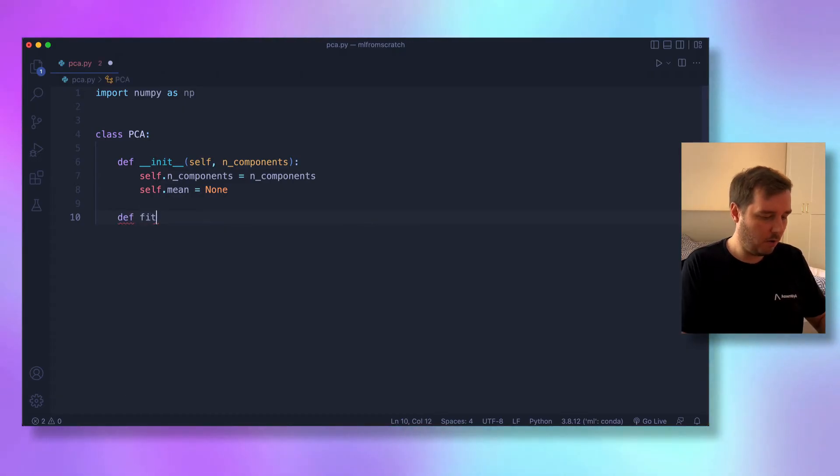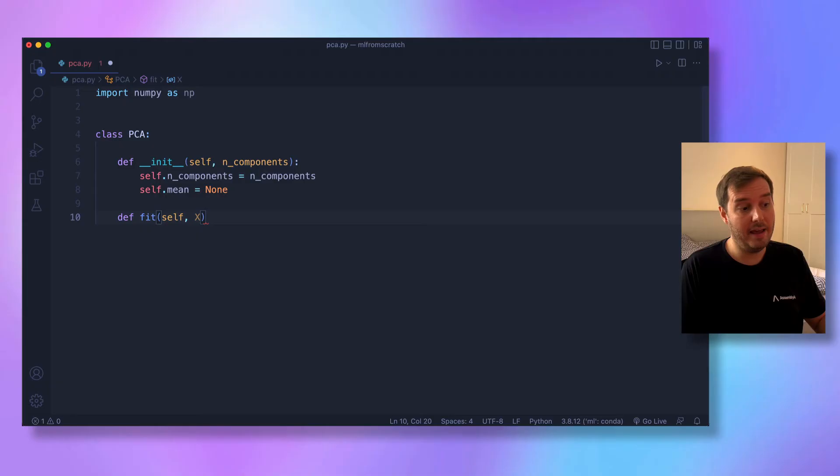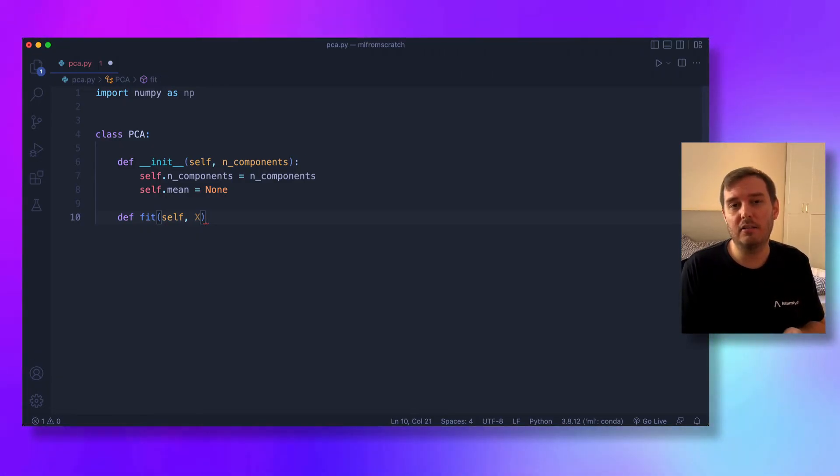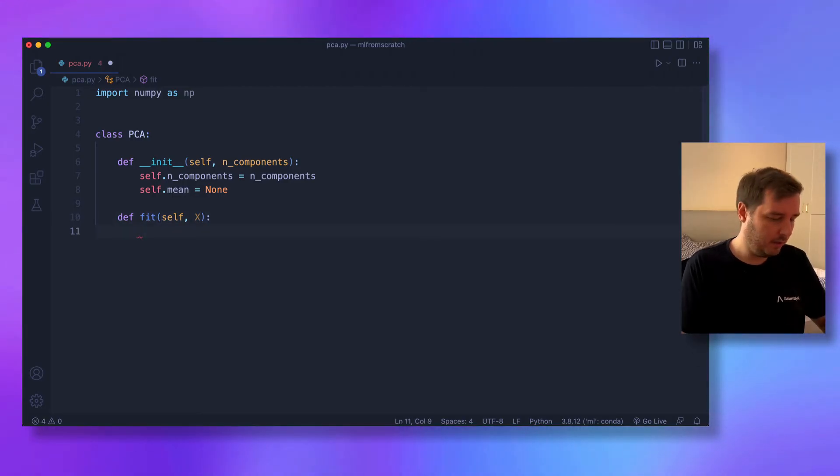Then we have our fit method, which gets self and only X, not y, because this is an unsupervised learning method, so we don't need the class labels.